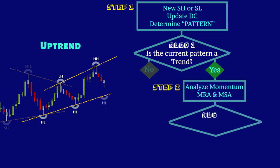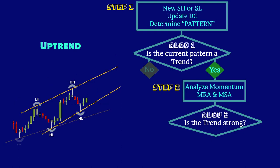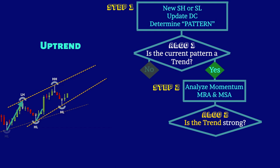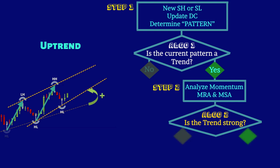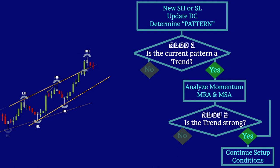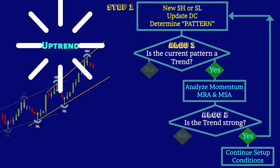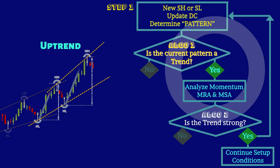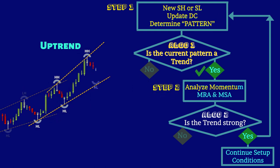The second algorithm condition constantly checks the momentum and gauges the strength and weakness of the established trend. If momentum range analysis or momentum slope analysis indicates that the trend is strong and not weakened, you will continue towards the rest of the setup algorithmic conditions, while constantly repeating step one with every new turning point to confirm the pattern is trending, and then step two to confirm that the momentum is strong.